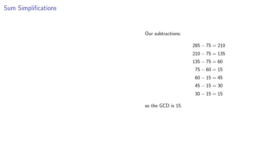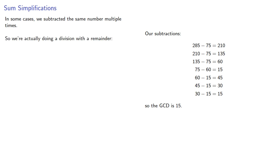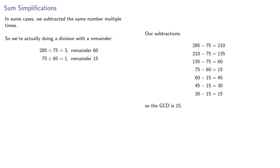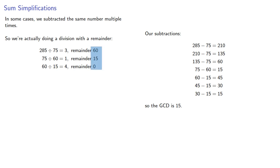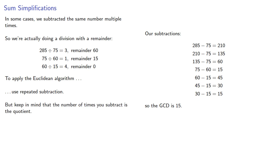Note that in our subtractions, we sometimes subtracted the same number multiple times — so we're actually doing a division with a remainder. When we subtracted 75 three times from 285 and got 60, we were doing the division 285 divided by 75 equals 3, remainder 60. We subtracted 60 once, so 75 divided by 60 is 1 with remainder 15. And we subtracted 15 four times, so 60 divided by 15 is 4, remainder 0. From this viewpoint, it's the last non-zero remainder that's our greatest common divisor. To apply the Euclidean algorithm, we should use repeated subtraction — it's actually easier than trying to do the division. But keep in mind that the number of times you subtract is the quotient.